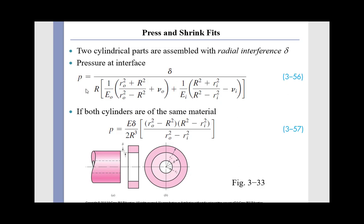Equation 356 shows an interface pressure that evolves at an interface between a collar and a shaft, as shown down here in the figure, with a set interference delta.